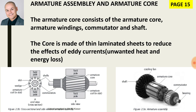The armature assembly consists of the armature core, armature windings, commutator, shaft, bearings, and cooling fan. The armature core itself is made up of thin slices of laminated steel sheets to reduce the effects of eddy currents. The negative consequences of eddy currents are unwanted heat and energy loss.